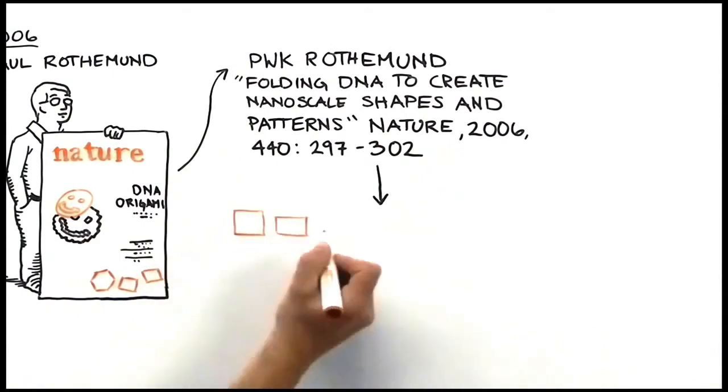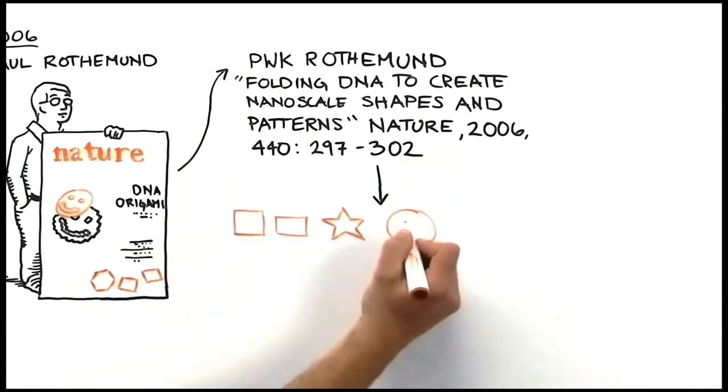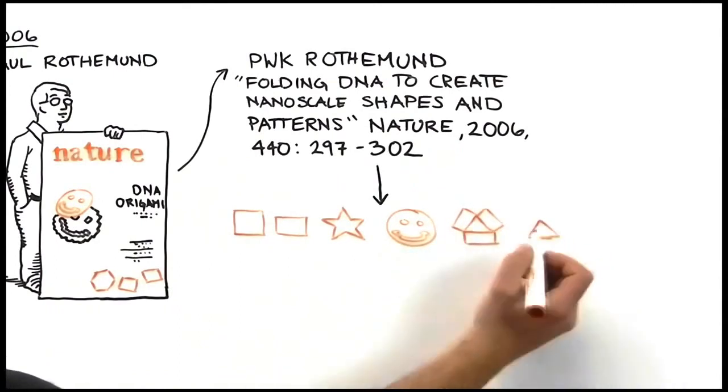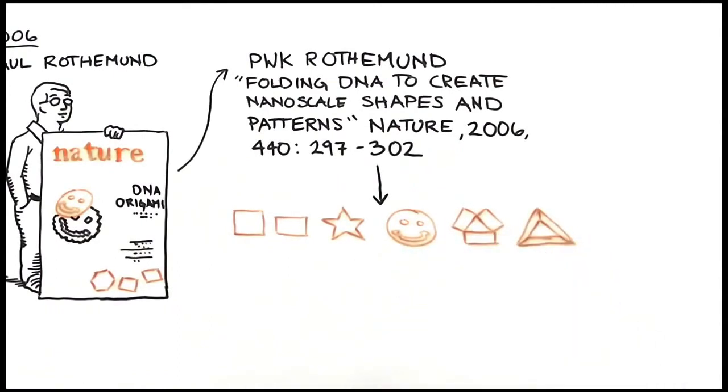So what we do is write computer programs to design sequences of DNA such that when we mix them together, they self-assemble into desired shapes with dimensions of 10 to 100 nanometers. Recently, we worked in William Shih's lab to extend the DNA origami method to create three-dimensional shapes.